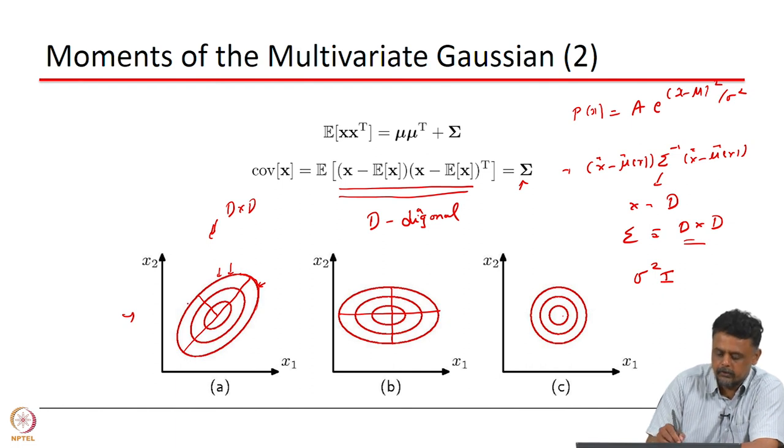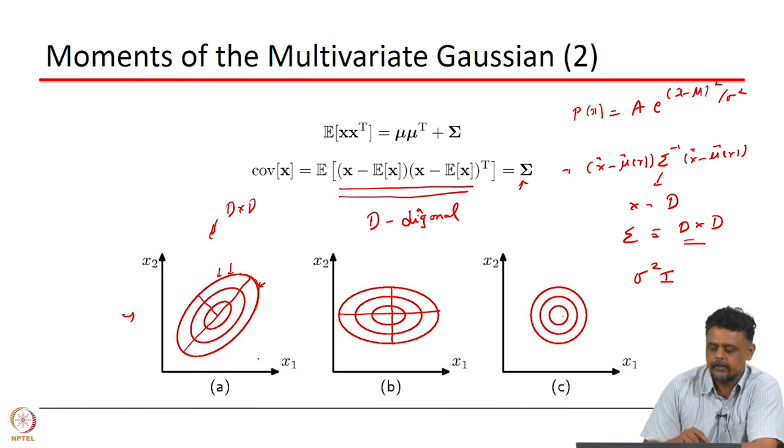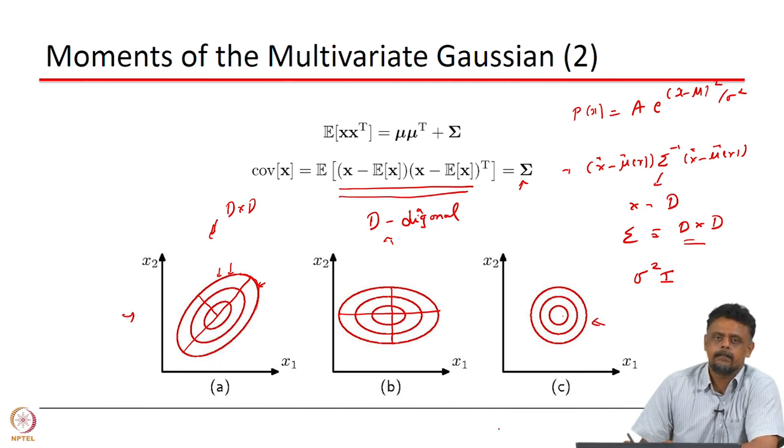If you think about it in x1, x2, P(x1, x2) will rise above the plane, and then if we just project them onto the plane, these are the lines we will get. So there are three cases: the most general case D cross D, D is a diagonal matrix but each diagonal element is different, and here again diagonal but each of the diagonal elements are the same.